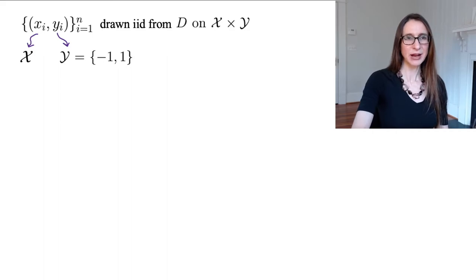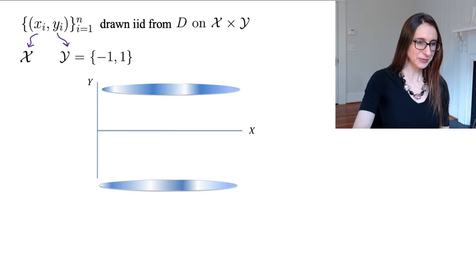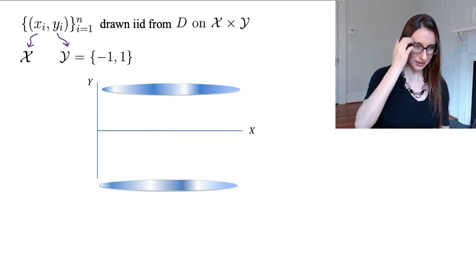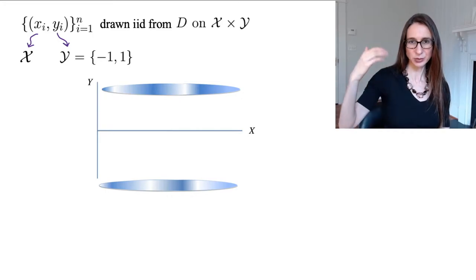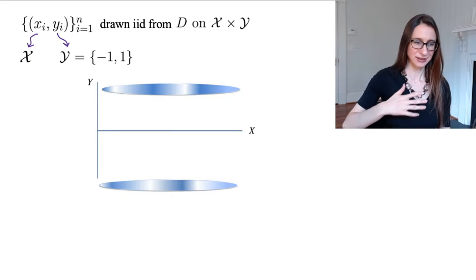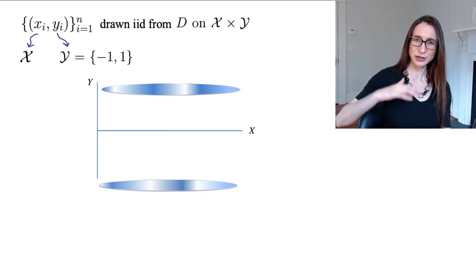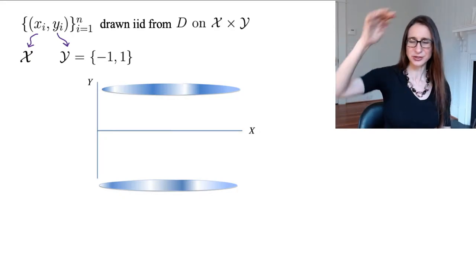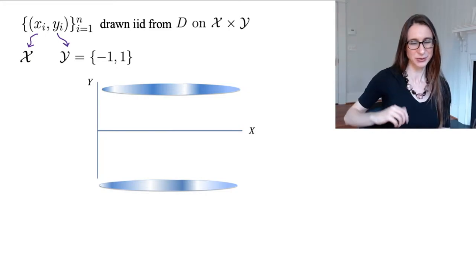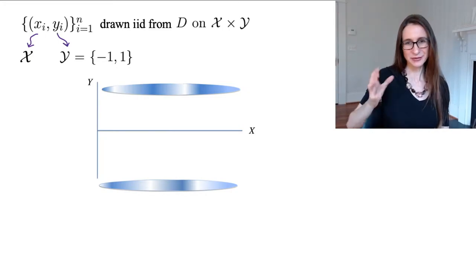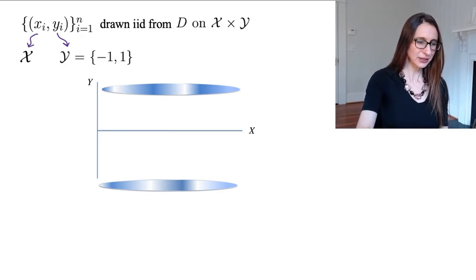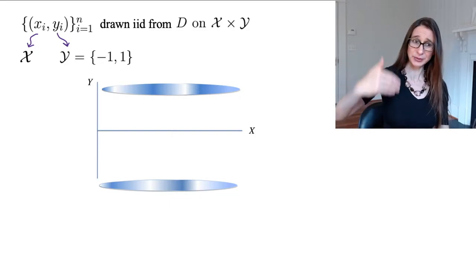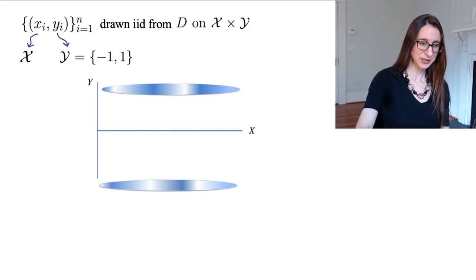If you want to think about this joint distribution D, X can be whatever it wants in the space X, and then Y is either plus one or minus one. There's some density — for each X, there's some density on plus one and minus one for Y. Maybe the areas of higher density are shaded in white. For each X, there's some probability that Y is plus one and some probability that Y is minus one.